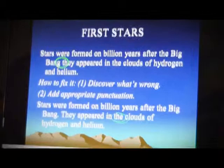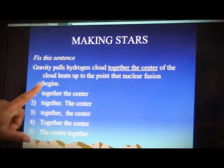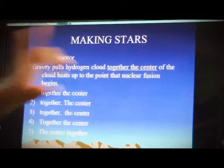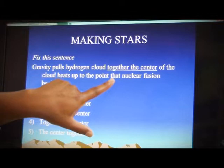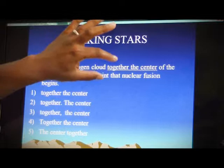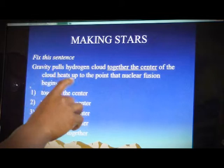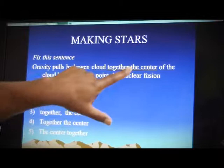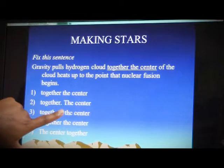Try it yourself. Fix this sentence: 'Gravity pulls hydrogen cloud together the center of the cloud heats up to the point where nuclear fusion begins.' The GED will have a line there telling you there's a problem. Gravity pulls hydrogen cloud together — that's one independent clause. The center of the cloud heats up to the point where nuclear fusion begins. Let's look at the choices. Choice one keeps it the same. Choice two: 'together period the center' — that might be correct. What do you think?